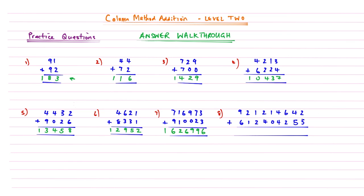Question eight — the long one: 2 add 5 is 7; 4 add 5 is 9; 6 add 2 is 8. Working through each column in turn — 4 add 4 is 8; 1 add nothing is 1; 2 add 4 is 6; 1 add 2 is 3; 2 add 1 is 3; then 6 add 9 gives 15, a two-digit number written under the invisible column. Well done — you can now move on to Column Method Addition Level 3!